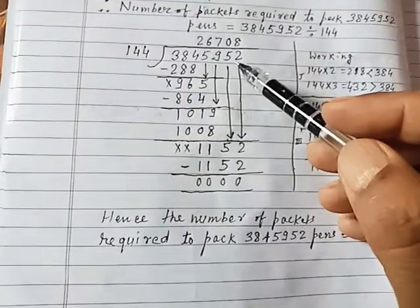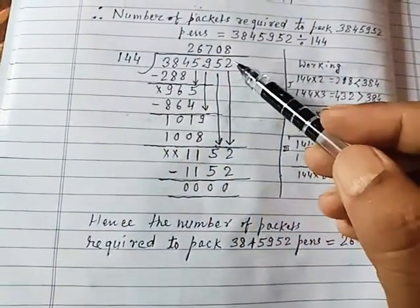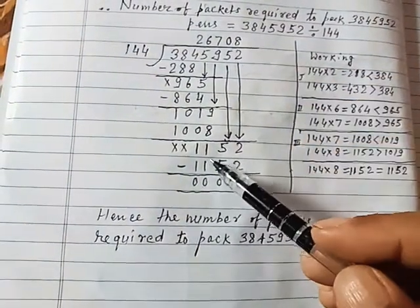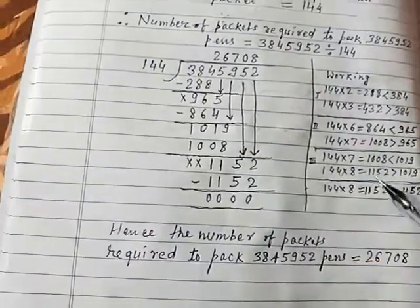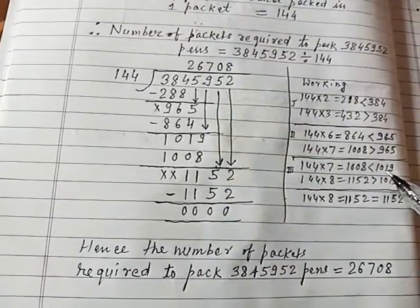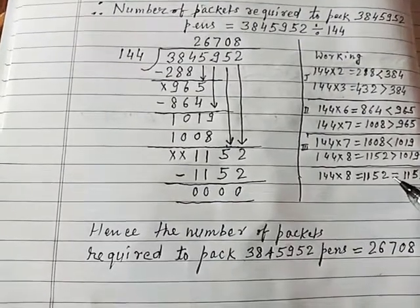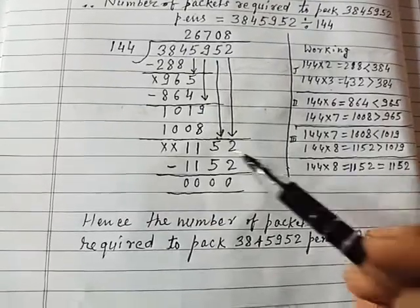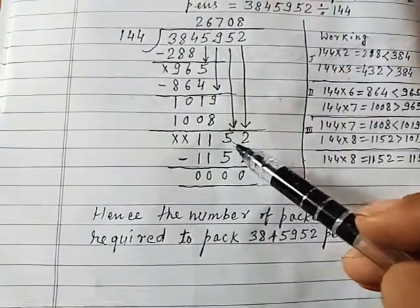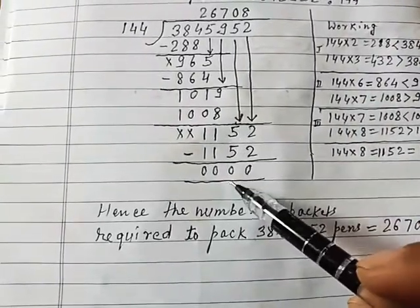Now putting down another digit, that is 5, will get here 115 which is still less than 144. So we should put down one more digit from the dividend, that is 2, and put here as 0. Now it will become 1152. Now 144 into 8 is equal to 1152 which is exactly equal to 1152. So 144 on dividing 1152 by 144 we will get the quotient as 8 and here 1152, and subtracting we will get the remainder 0.